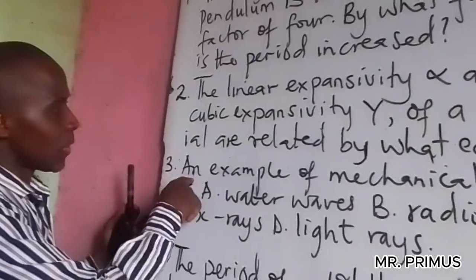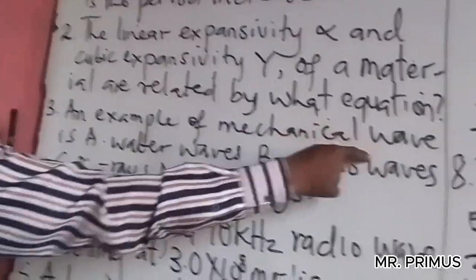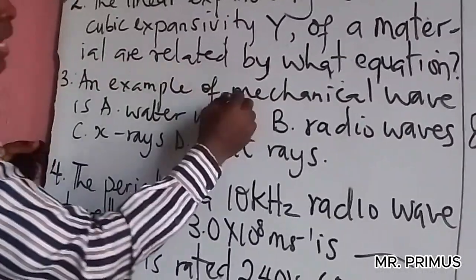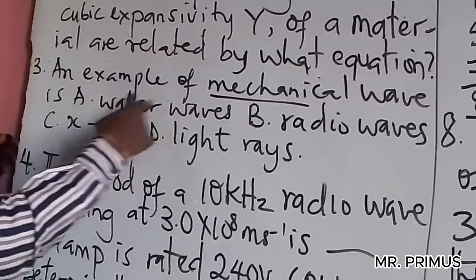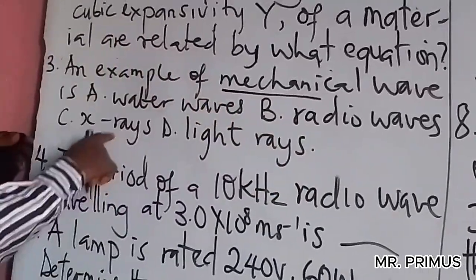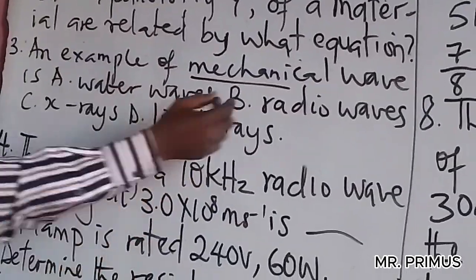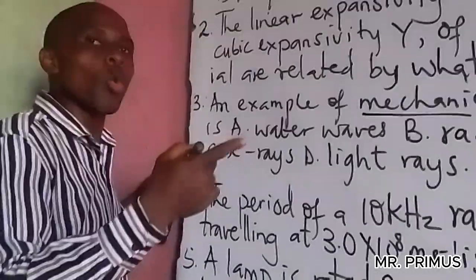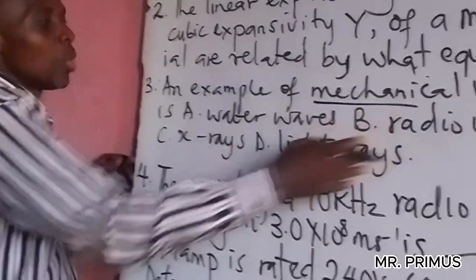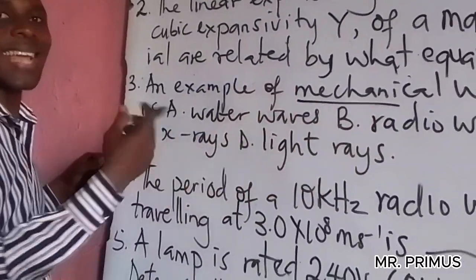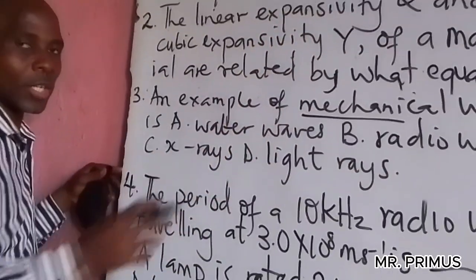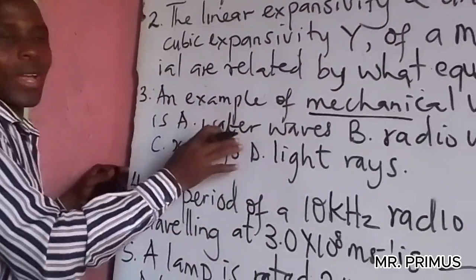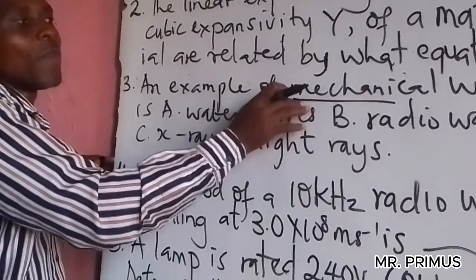Let's look at question number three: an example of a mechanical wave is... Water waves, radio waves, x-rays, light rays. Radio waves, x-rays, and light rays are not mechanical waves — they are electromagnetic waves. Electromagnetic waves do not require a material medium for their propagation, while water waves do require a material medium, so water waves is the mechanical wave.